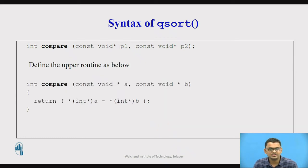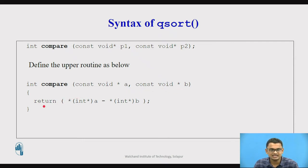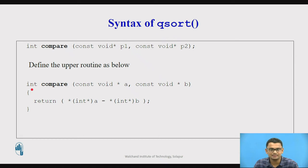So we define the compare routine as follows: we need two pointers pointing to two different elements in the array, and we return the difference between them, casting it to integer, which is then returned as a parameter to our qsort function.